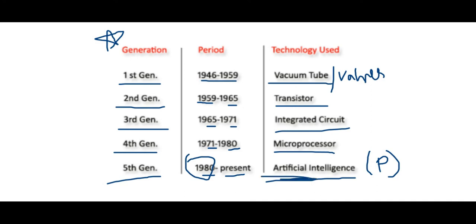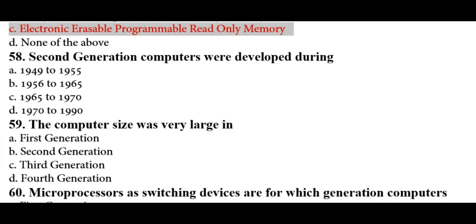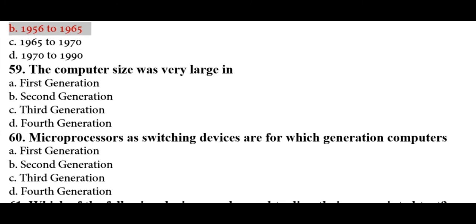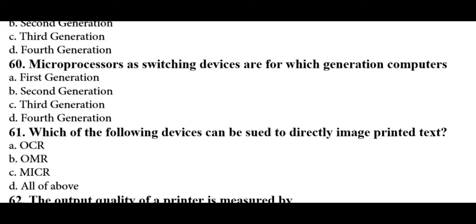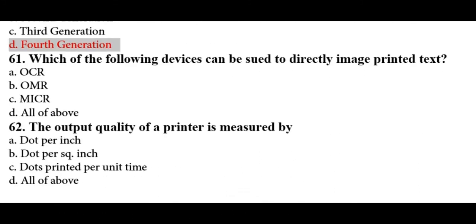From 1980 to the present we have been proceeding with artificial intelligence. The second generation computers were developed during 1959 to 1965, which is option B. The first generation computers were very large, using vacuum tubes. Microprocessors are switching devices for fourth generation computers.